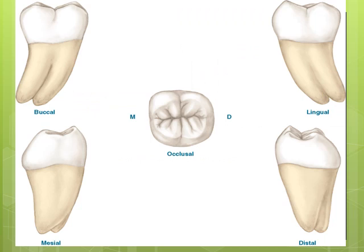This diagram, taken from Margaret J., represents the different views of the mandibular third molar. More supplemental grooves are present. The mesial cusps are larger in size than the distal cusps.